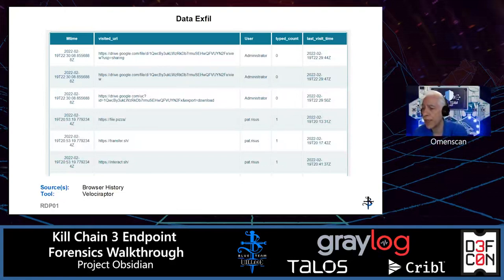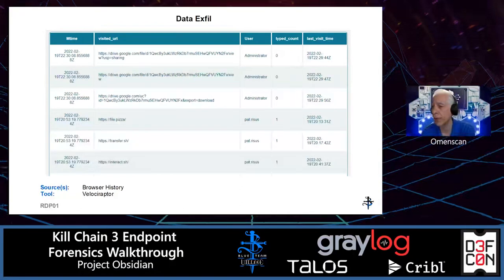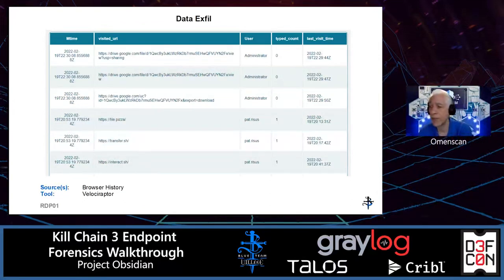We also see the machine reaching out to interact.sh. This might indicate exfiltration, but interact.sh is actually an out-of-band detection mechanism used to report on whether an attack was successful or not. In this case, we don't see the typical URL we would expect from interact.sh, so the actor reached out to interact.sh and was likely just looking at it — probably not being used for exfiltration.